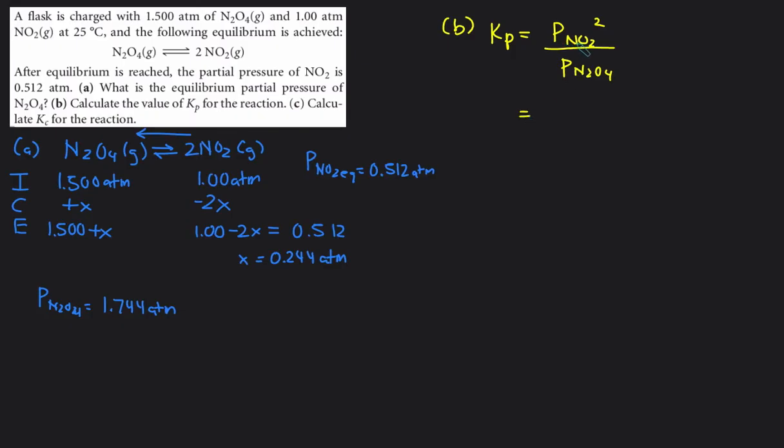The equilibrium pressure of NO2 was given to us in the question and it says it's 0.512. So it'll be 0.512 squared divided by the equilibrium pressure of N2O4, which is what we solved for in part a: 1.744. Plug that into the calculator and then we'll get a value of 0.150.